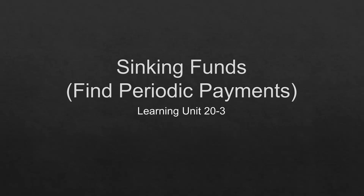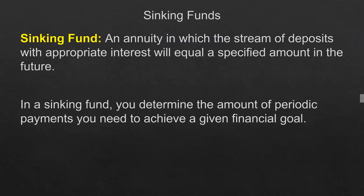Here we are on section 20-3, the very last lesson for business math. This one is about sinking funds, and we're going to be finding the periodic payments. A sinking fund is an annuity in which the stream of deposits with appropriate interest will equal a specified amount in the future. In a sinking fund, you determine the amount of periodic payments you need to achieve a given financial goal.